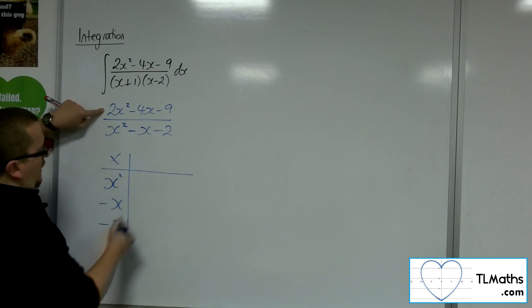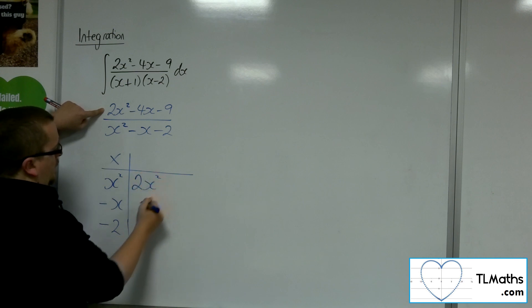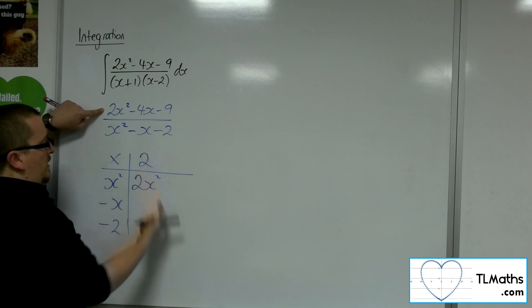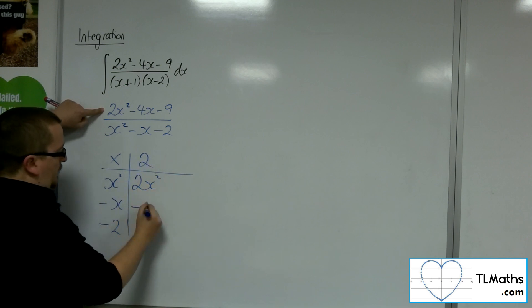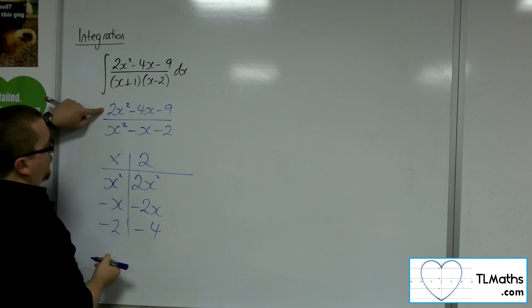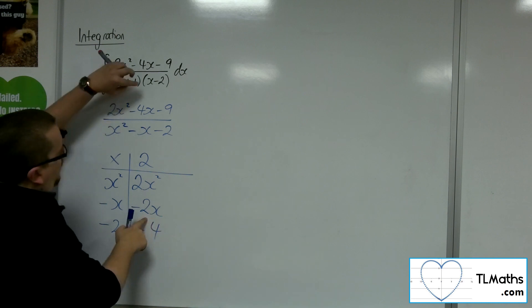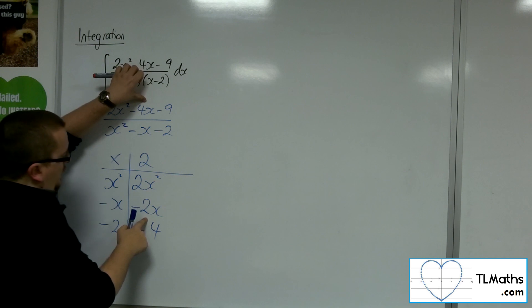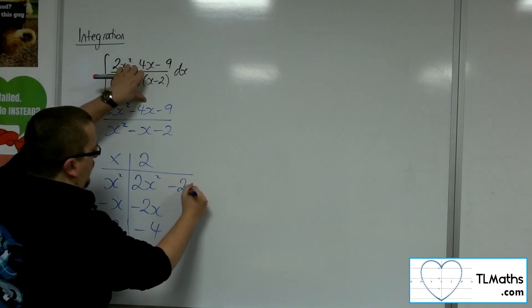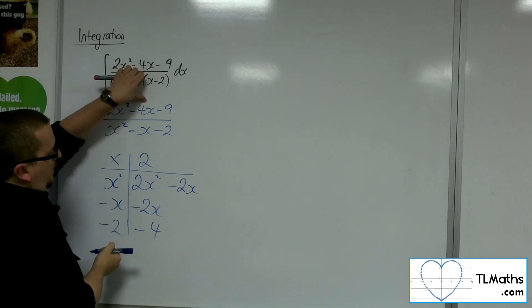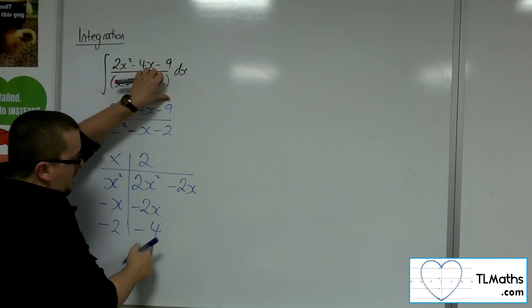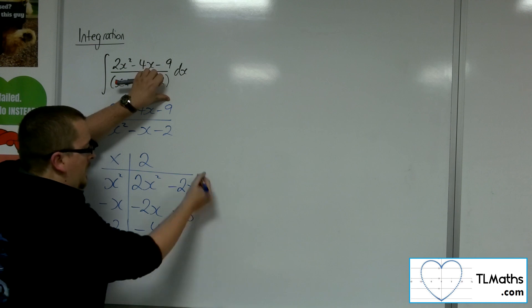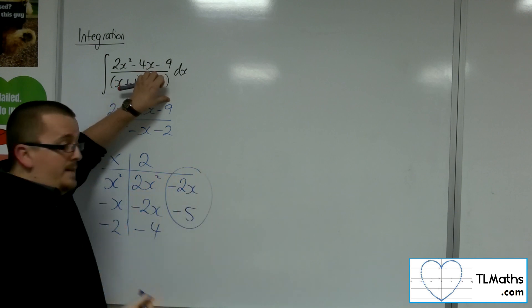We want to get 2x squared. So this would have had to have been a 2 in the multiplication grid. So 2 lots of x squared makes the 2x squared. 2 lots of minus x is minus 2x. 2 lots of minus 2 makes minus 4. Now we've got minus 2x but we want minus 4x. So we're going to have to take away another 2x to get to minus 4x. And we've got minus 4 but we want minus 9. So we're going to have to take away another 5. So this is our remainder.